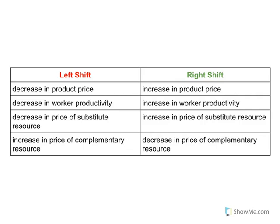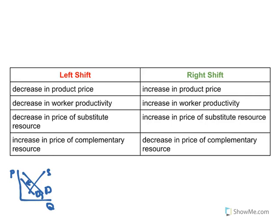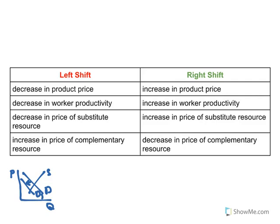Let me show you with this table of what shifts the labor demand curve to the left and to the right. For a left shift, the first thing is a decrease in the product price. If I'm getting a lower price for my product, that probably means the product demand curve shifted left, and because I'm getting a lower price, according to derived demand, that means less demand for resources including labor — so the labor demand curve shifts left. For a right shift, if I'm getting a higher price for my product due to an increase in demand, I'm going to want more resources to make this suddenly popular product, so the demand curve shifts right.